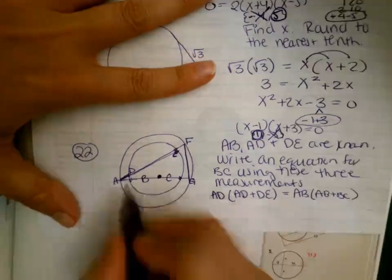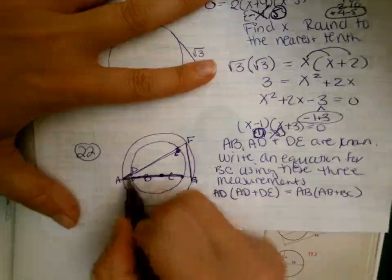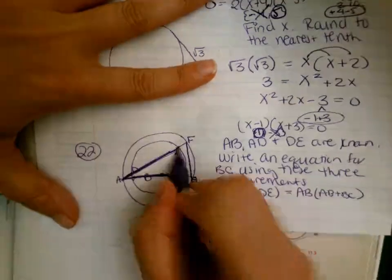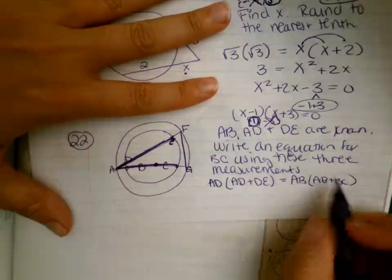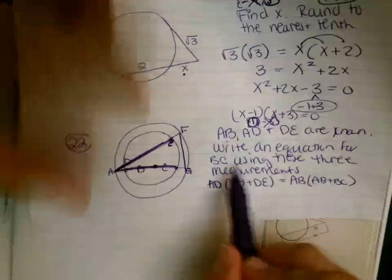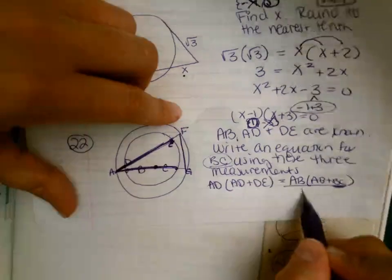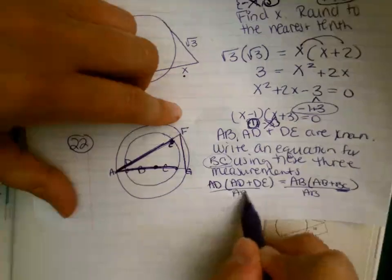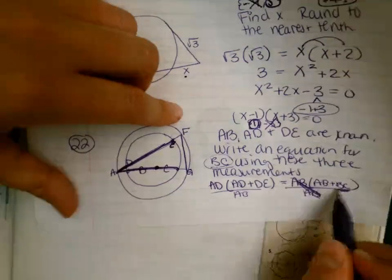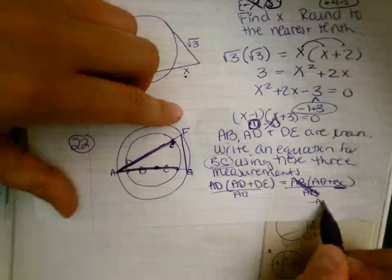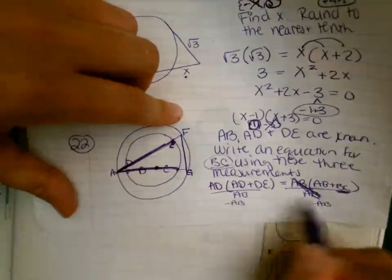So we're just doing outside times whole equals outside times whole. We are trying to solve for BC. We want BC to be alone. So I'm going to divide both sides by AB. And then I'm going to subtract AB on both sides.